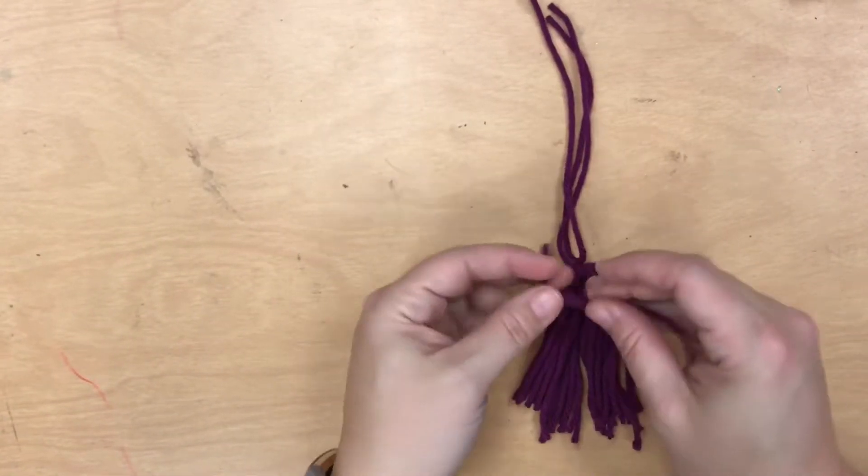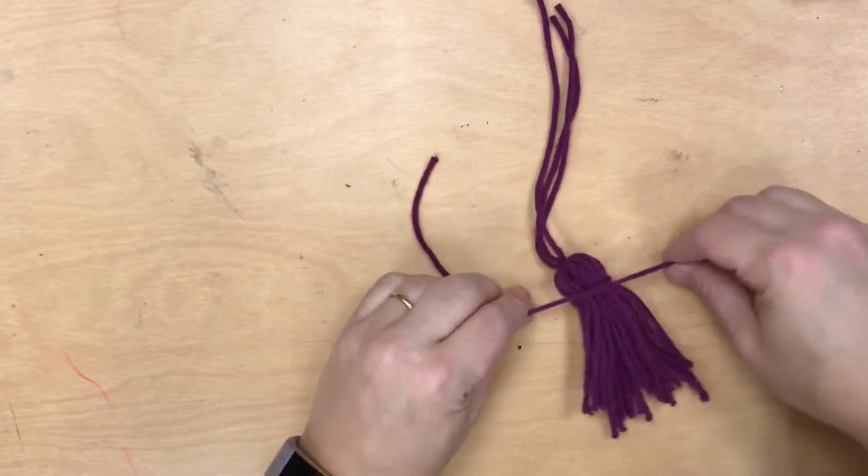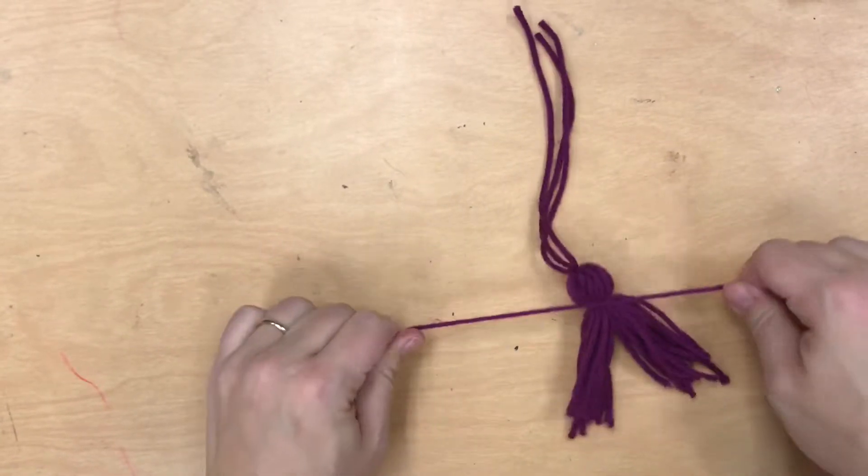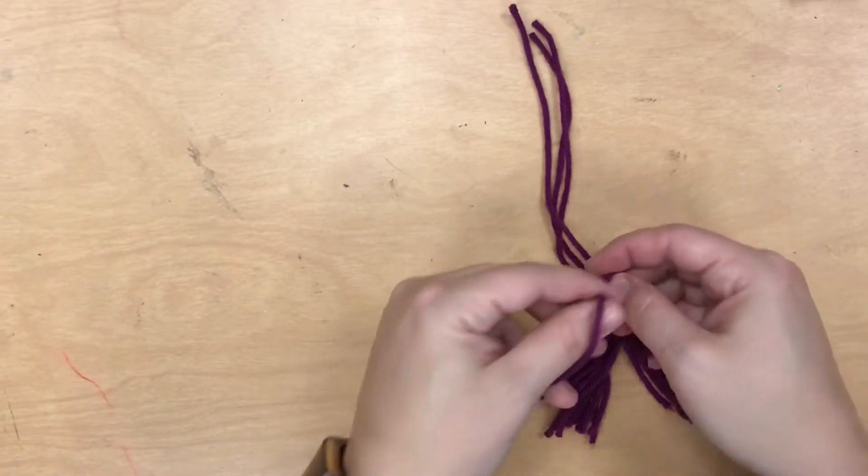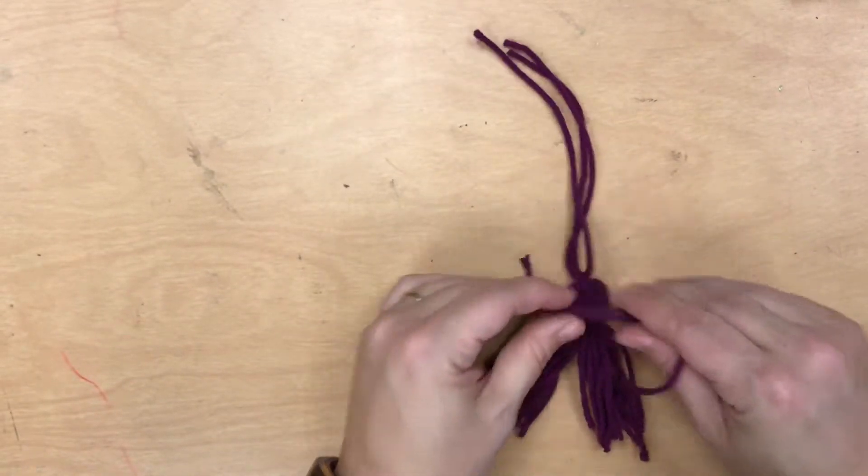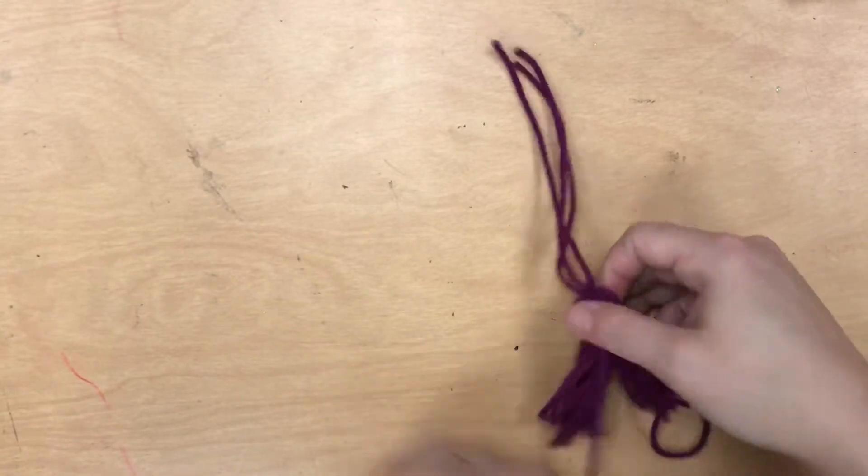So behind the top of the tassel I now make a knot and cinch it so that there's a little ball on top. Then I tie a second knot to make it nice and secure with a double knot.